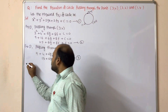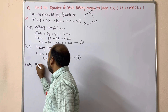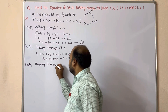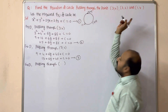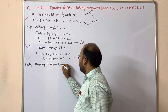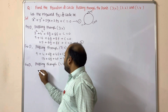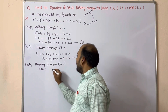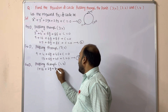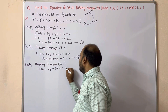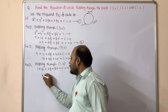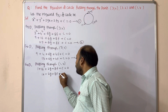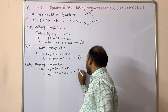Substituting the third point (1,4) into Equation 1: 1² + 4² + 2g(1) + 2f(4) + c = 0, which gives 1 + 16 + 2g + 8f + c = 0, so 17 + 2g + 8f + c = 0. Keep this as Equation 4.